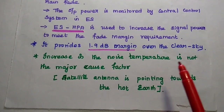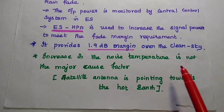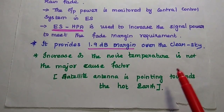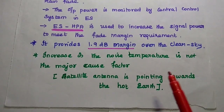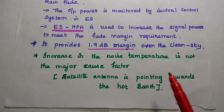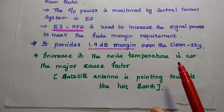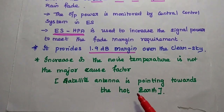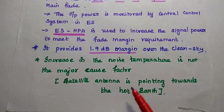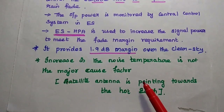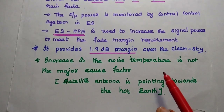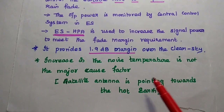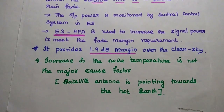The increase in noise temperature is not the major cause factor of signal fading, because the satellite antenna is pointing towards the Earth. Therefore, the noise temperature increased by rain fading is not a big issue in the uplink system.